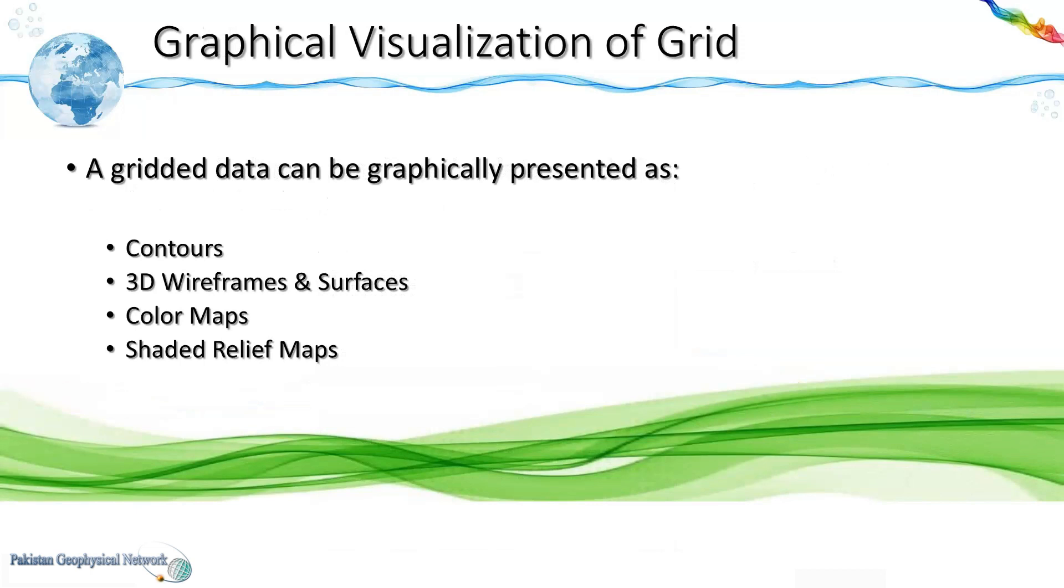The grid can be graphically represented in a number of different forms such as contours, 3D wireframes and surfaces, color maps as well as shaded relief maps. You will quickly see all these different graphical forms one by one.